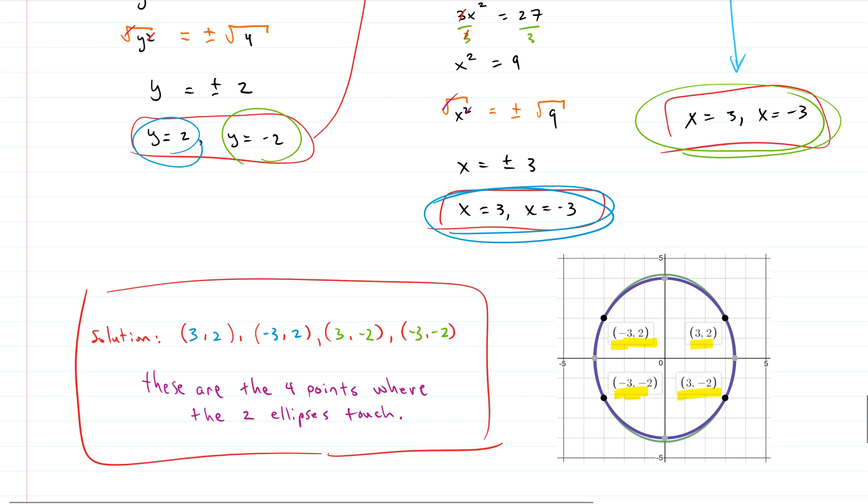Negative three, positive two. Three, positive two. Negative three, negative two. And three, negative two. There you go. If you have any questions, let me know. Thanks for watching.